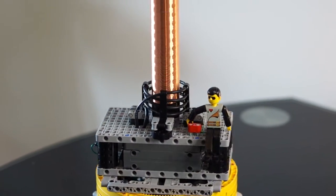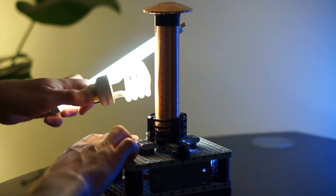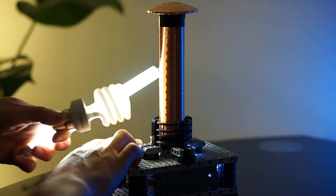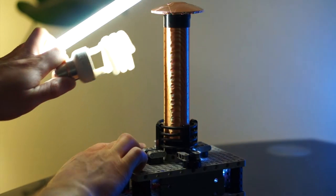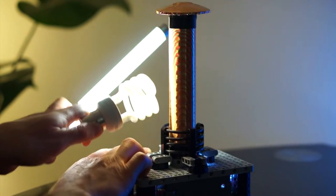This is a baby LEGO Tesla coil, also known as a Slayer exciter. And this is the Slayer wirelessly powering a couple of fluorescent bulbs. Who would have thought you can use LEGO to wirelessly transmit power? Well I guess it's mostly the circuit responsible for that, but let's give LEGO some credit for this video.